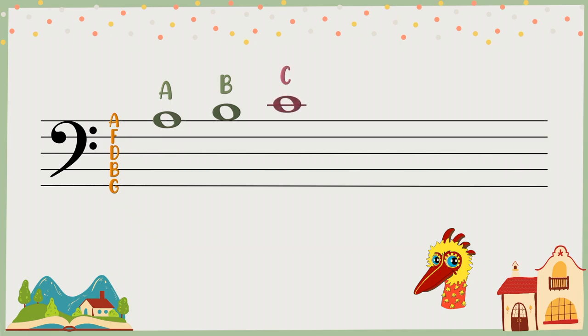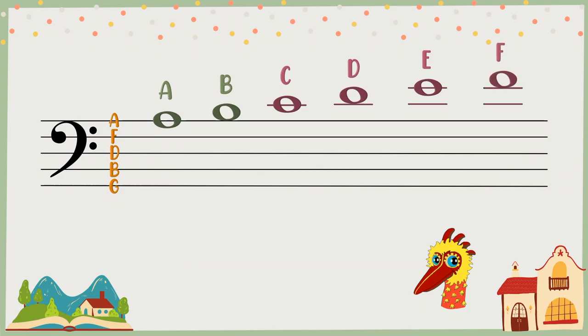Above the ledger line, it's D. Add a second ledger line, you'll get E. Above it, it's F.